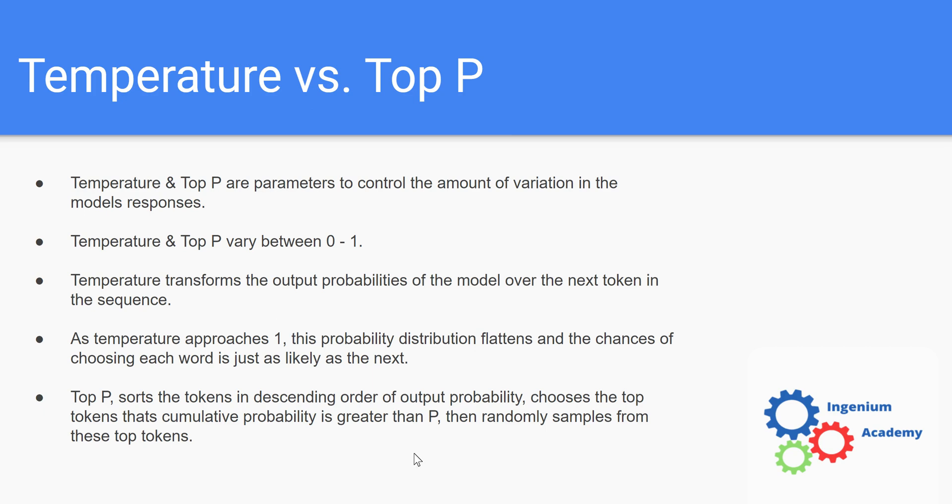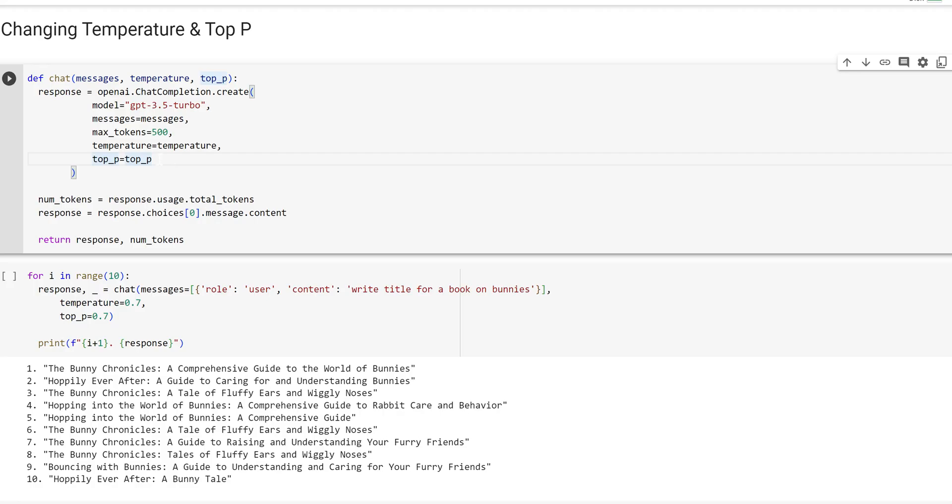I didn't want to go too far in depth here, but I want to show you now how you can change these in OpenAI's API calls and how that will actually change the output. Here we are - I've created a new chat function that takes in temperature and top P. This is where you can change them right here. Everything else is the same.